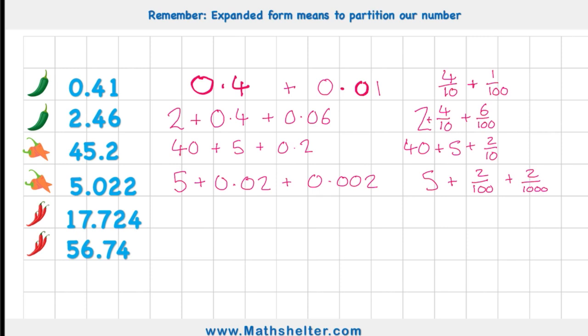Let's step it right up then into our red chilli challenge, looking at some large numbers with lots of decimals. 17.724 would be 10 added to 7, and added to 0.7 which would be 7 tenths, added to 0.02 for my 2 one hundredths, and then added to 0.004 for my 4 one thousandths. Or looking at it as a fraction, I'd have 10 plus the 7 plus 7 tenths, plus 2 one hundredths, plus 4 one thousandths. Sorry, that's a bit squished at the end there. I'm running out of paper.